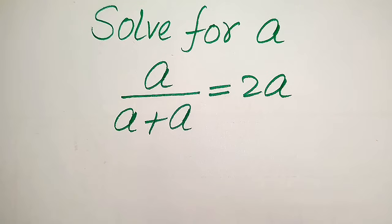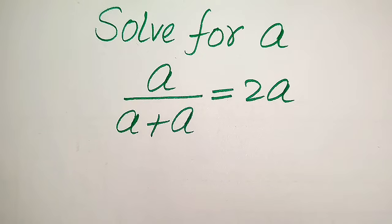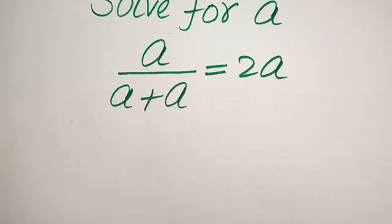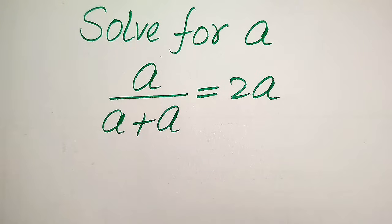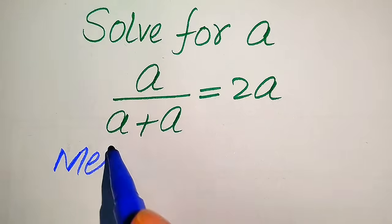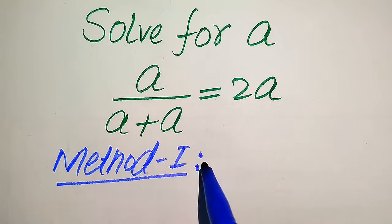Welcome everyone. We solve this algebra problem: a divided by (a plus a) equals two times a, and we solve for the values of a. We first find all the roots of this equation, then check which roots are solutions and which are extraneous roots. I'll explain the term 'extraneous root' at the end. We solve this problem using two methods.